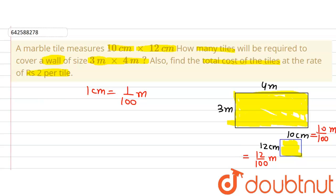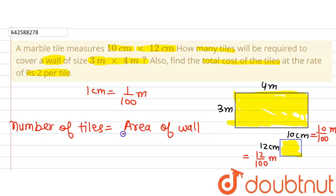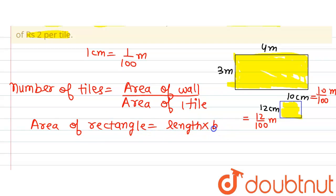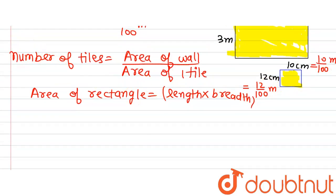Now let's find out the number of tiles. The formula we are going to use is: number of tiles equals area of the wall divided by area of 1 tile. Since both the wall and the tile are rectangular, the area formula is length multiplied by breadth. So, number of tiles N = (3 × 4) divided by (12/100 × 10/100).